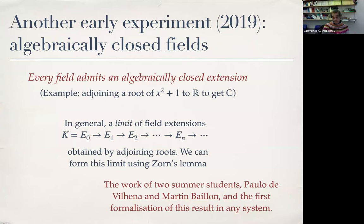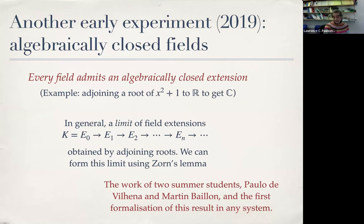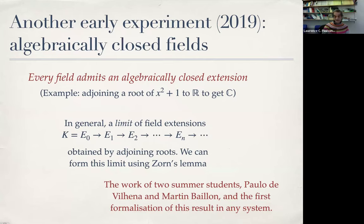A well-known fact in algebra is that every field admits an algebraically closed extension — for example, we can extend the real numbers to obtain the complex numbers, which is algebraically closed, by adding the root of the polynomial x² + 1. The interns managed to find a construction using Zorn's lemma and squeeze it into our formalism. I was not at all confident in 2019 that this kind of series of field extensions was a thing that could be formalized, let alone done by a couple of students. This was the very first time this result had been formalized anywhere.